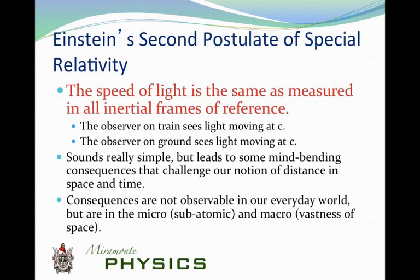His second postulate of relativity states: the speed of light is the same as measured in all inertial frames of reference. An observer on a rocket ship sees light moving at c; an observer on the ground also sees light moving at c. This seems simple, but it leads to mind-bending consequences: length contracts, distance can be foreshortened, and time dilates — it slows down — when objects move at near the speed of light. These effects aren't observable in everyday life, but they're very real for subatomic particles like electrons accelerated in a field.